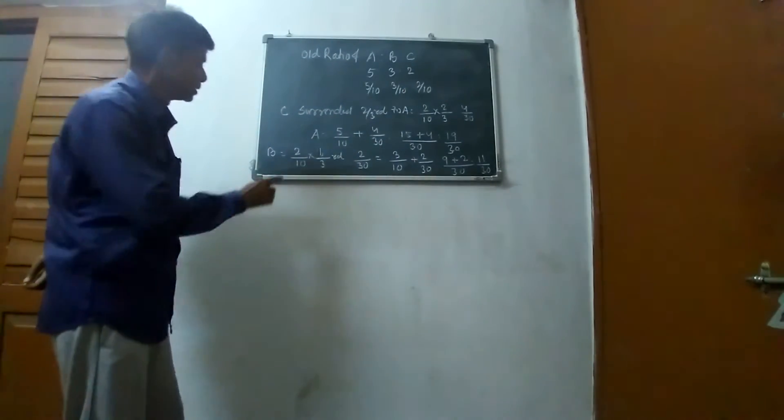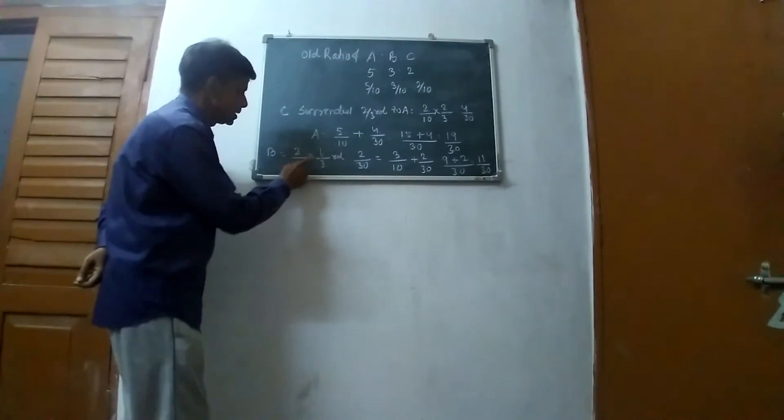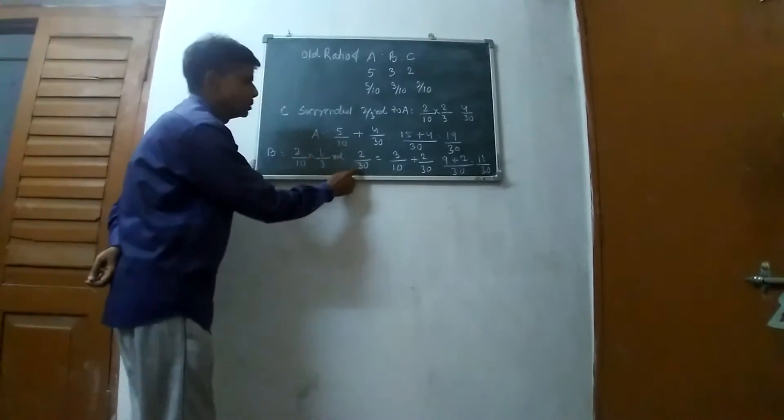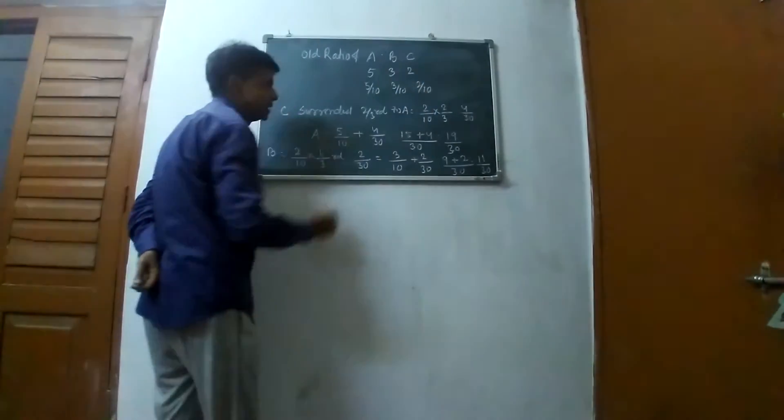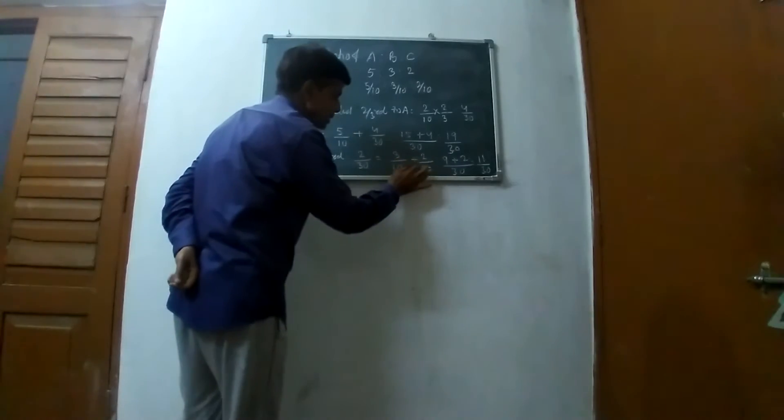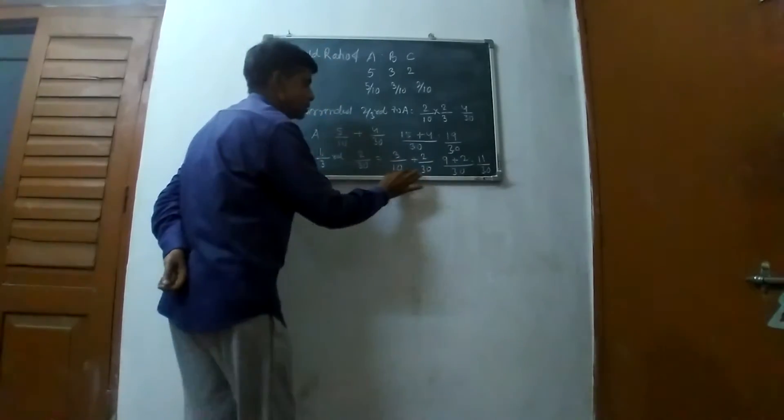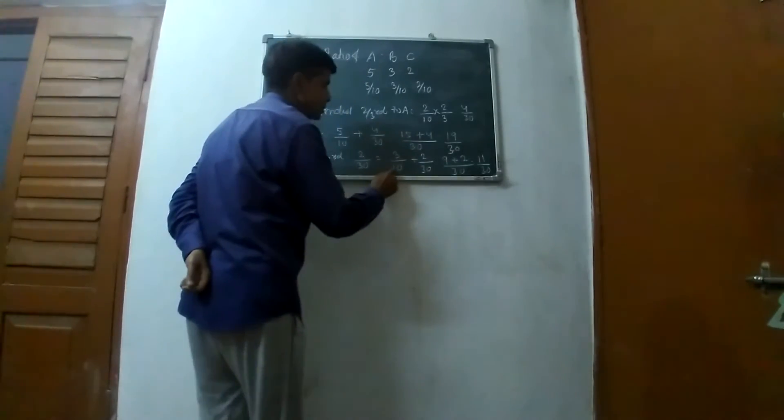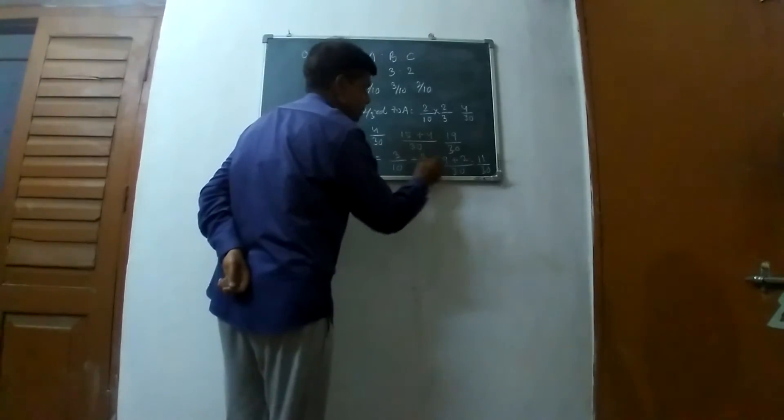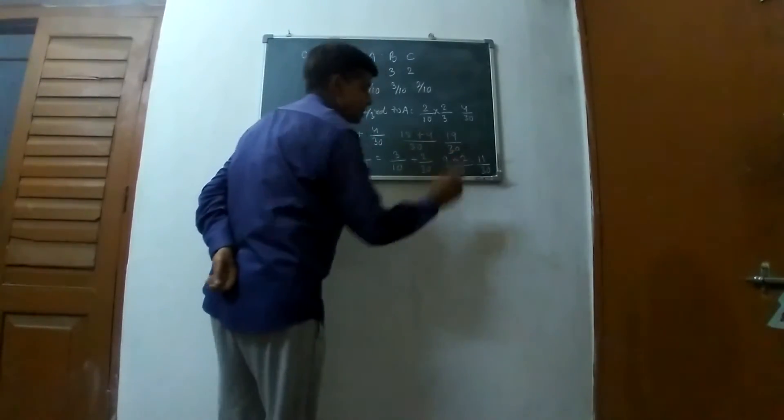One-third of 2/10 is 2/30. B had 3/10, add 2/30 from C. Taking LCM of 10 and 30 as 30: 9/30 + 2/30 = 11/30.